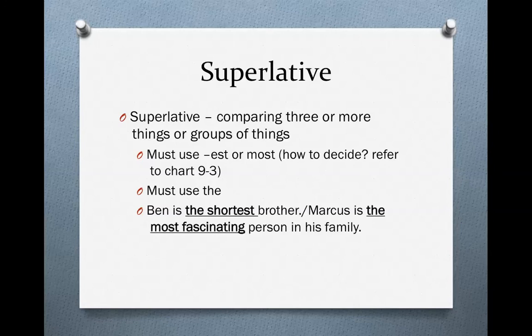Let's look at some examples. Ben is the shortest brother. Notice that we take the adjective 'short,' add -est, and put the article 'the' in front of it — the shortest brother. There is no 'than' here. We could also say Marcus is the most fascinating person in his family. 'Fascinating' is our adjective; we put 'most' in front of it and the article 'the' in front of 'most' — the most fascinating person in his family. Again, no 'than' when we're using superlatives.